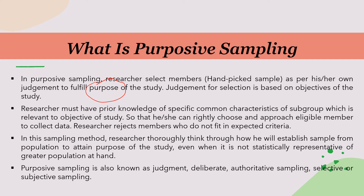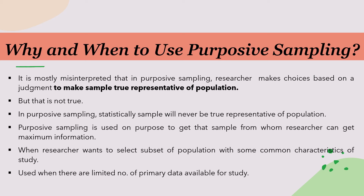Purposive sampling is also known as judgment sampling, deliberate sampling, authoritative sampling, selective sampling, or subjective sampling. It is mostly misinterpreted that in purposive sampling, researcher makes choices based on judgment to make the sample a true representative of the population, but that is not true. In purposive sampling, statistically the sample will never be a true representative of the population. For that, researcher needs to go for probability sampling methods. Purposive sampling is used on purpose to get a sample from whom researcher can get maximum information. When a researcher wants to select a subset of population with some common characteristics relevant to the study, purposive sampling is used. It is also used when there are limited number of primary data available for the study.